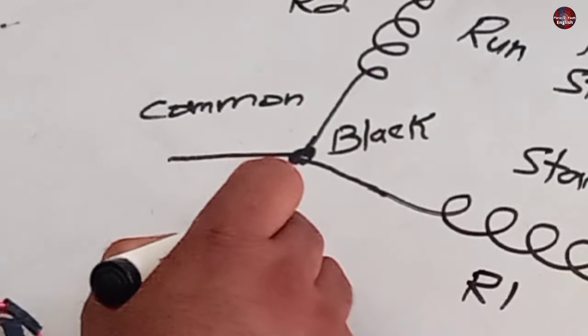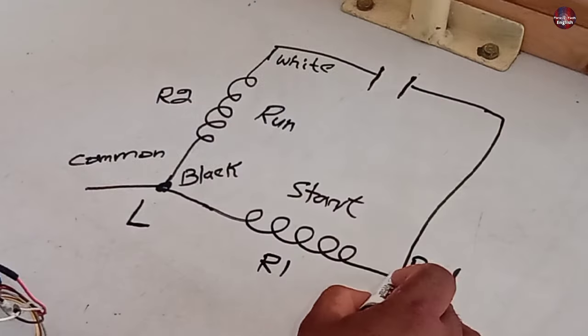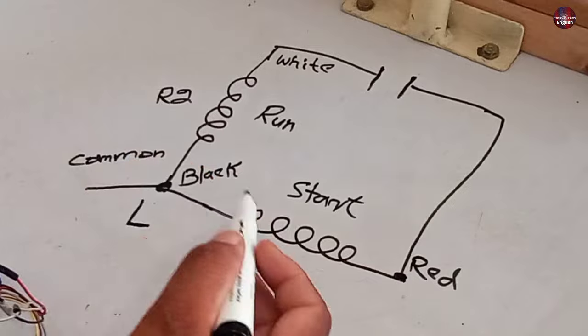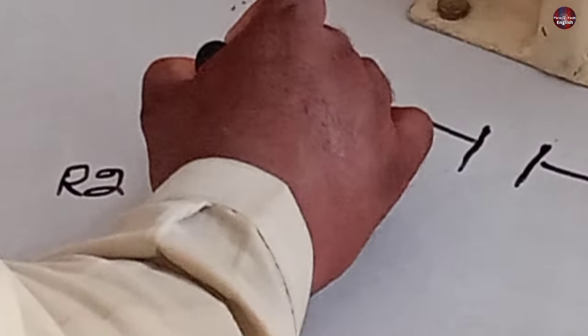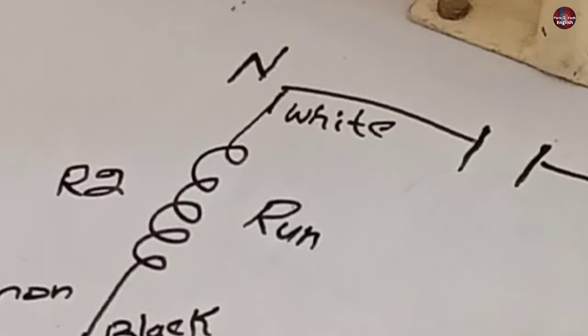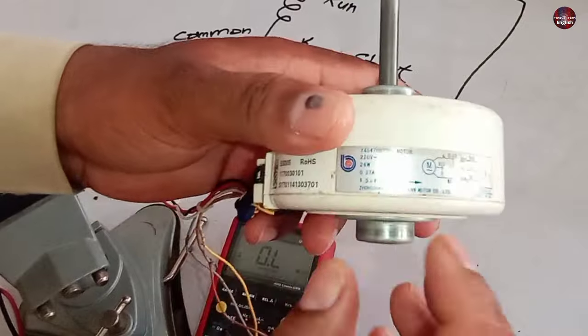Always remember that the common wire is always given the phase or line connection. Now I will erase it and install a capacitor with white and red wires. We know that the run is the white wire and the start is the red wire. The neutral wire will be installed with the white or run wire. And the red is joined with the capacitor. And this is how to do the wiring of this motor.